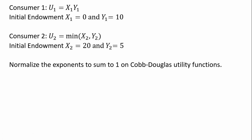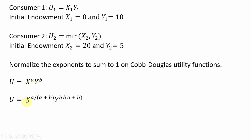First thing we'll do is normalize the exponents on the Cobb-Douglas utility function to sum to 1. This will simplify the mathematics for us. Here's our general Cobb-Douglas utility function raised to the a and b power for good x and good y. To normalize exponents to sum to 1, we do a divided by (a plus b) and then b divided by (a plus b).